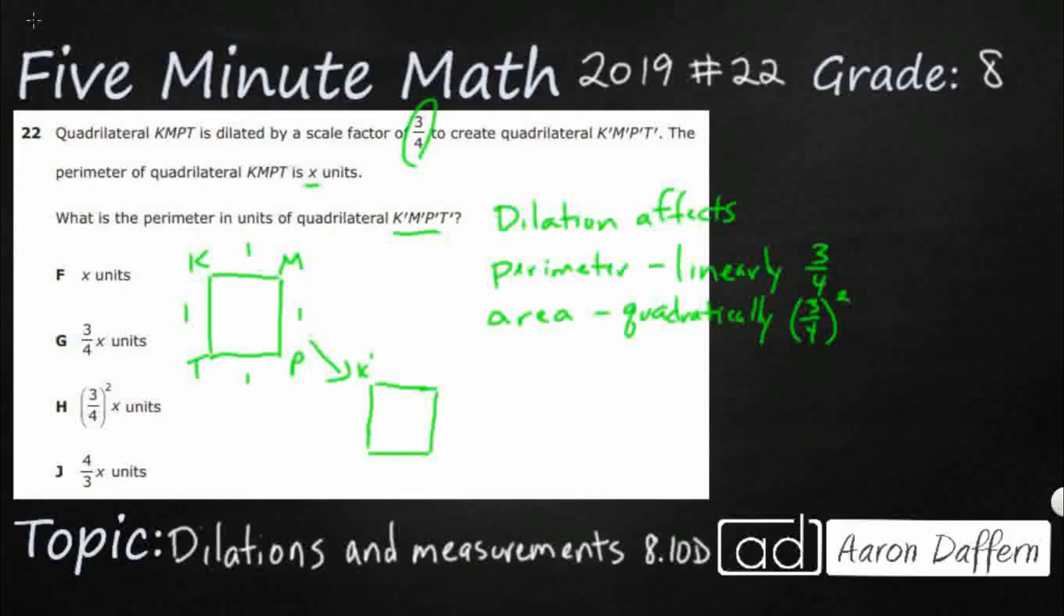So this is K prime, M prime, P prime, and T prime. And each of these are three quarters. So that's how the scale factor works. It needs to be three fourths as big as the original. Since my original is one, let's just make it three quarters.